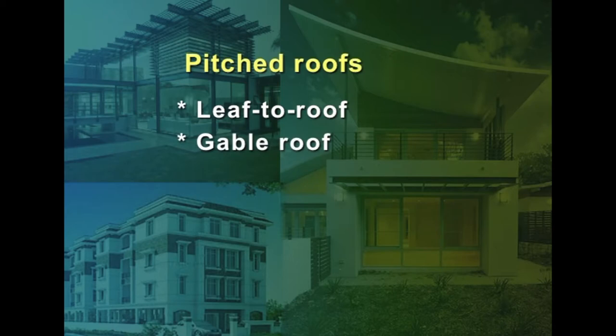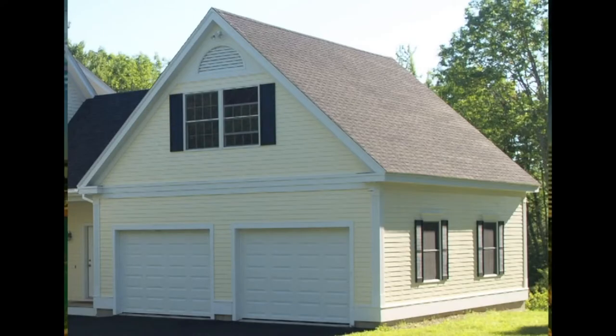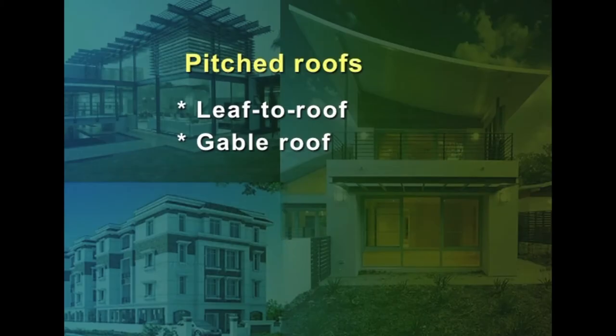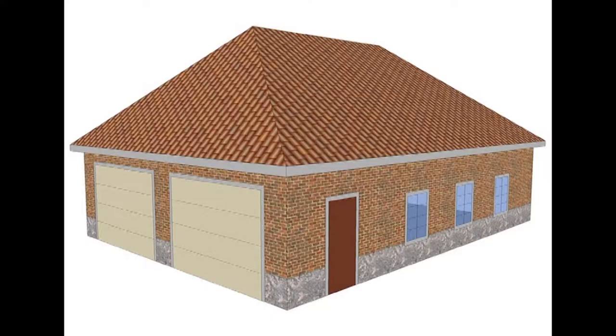The gable roof is a common type of sloping roof which slopes in two directions. The two slopes meet at the ridge, and at the ends a vertical triangle is formed. A hip roof is formed by four sloping surfaces in four directions; at the ends, sloped triangles are formed.